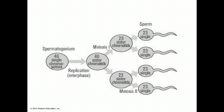A gamete, which can be a sperm or an egg, contains a single set of chromosomes and is haploid. For humans, the haploid number is 23, sometimes written as N equals 23. Each set of 23 chromosomes consists of 22 autosomes and one sex chromosome. In an unfertilized egg, the sex chromosome will always be X. In a sperm cell, the sex chromosome may be either X or Y.